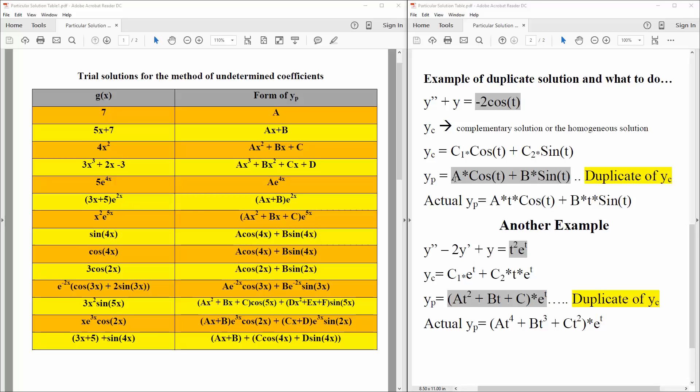But if you notice, if a is replaced by c1 and b is replaced by c2, we have a duplicate solution. And so actually, our y_p would be, we simply just multiply by t each component. So a times t cosine t plus b times t sine t. So it's unique.